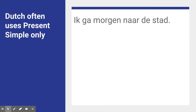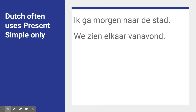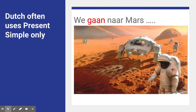In Dutch, we often use present simple only. For example: 'ik ga morgen naar de stad', 'we zien elkaar vanavond' — that is all present simple. 'Ik ga' — one verb; 'we zien' — one verb, present simple. 'We gaan naar Mars' — okay, in the future. But not in English; you have to use another tense.